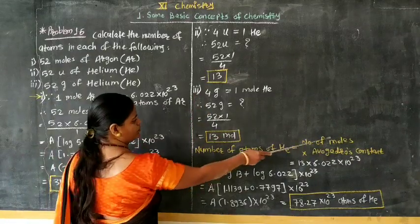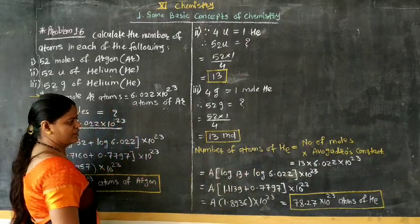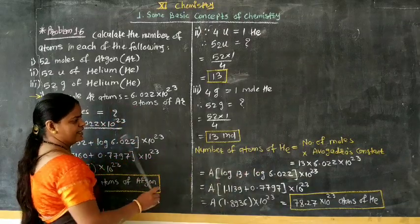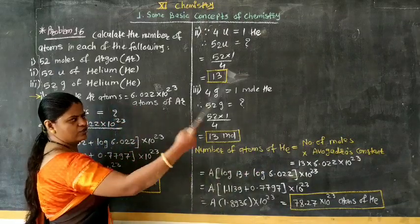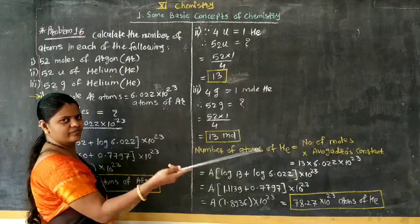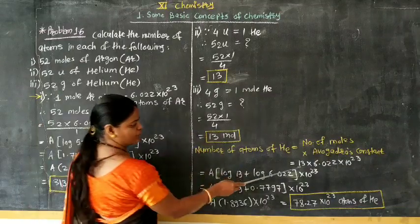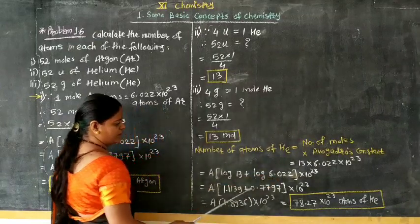Number of atoms is equal to number of moles into Avogadro's number. We have to find out that 1 mole is the Avogadro's number of particle. Look here: 13 into Avogadro's number.